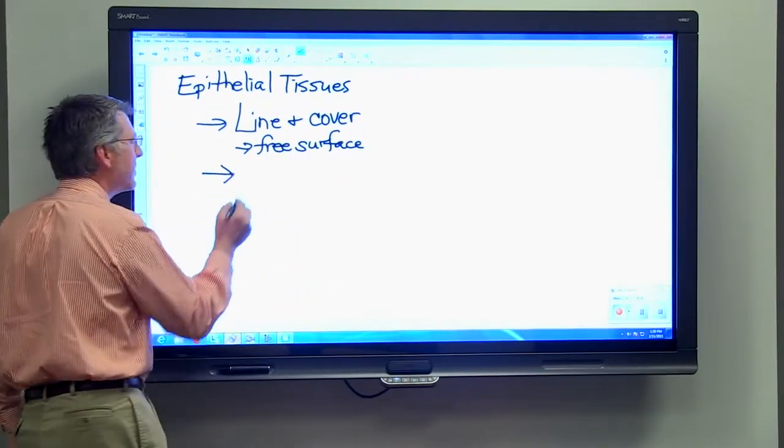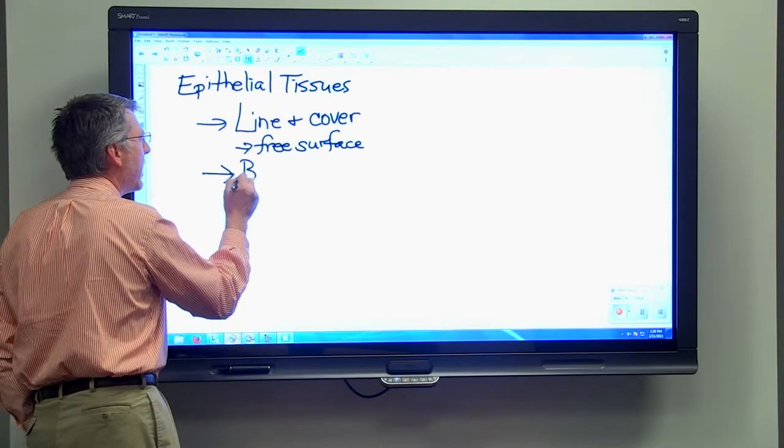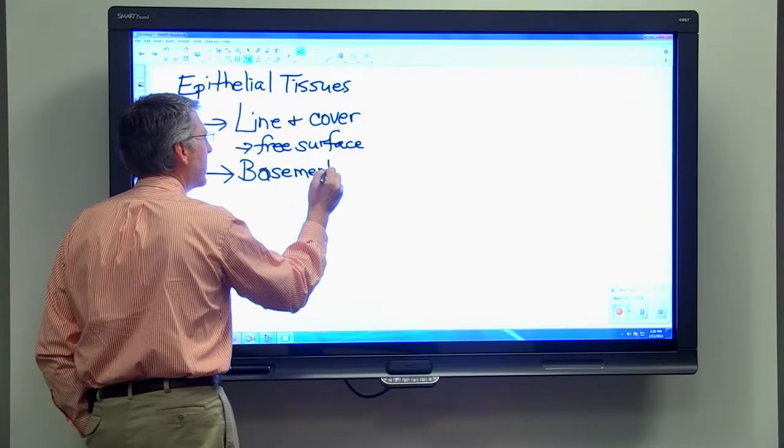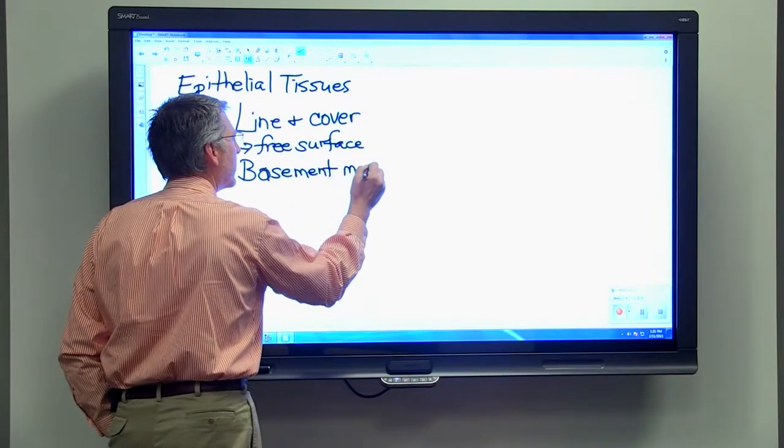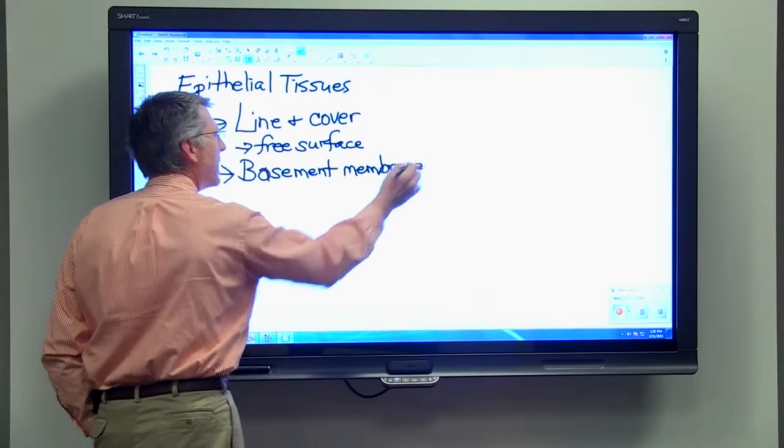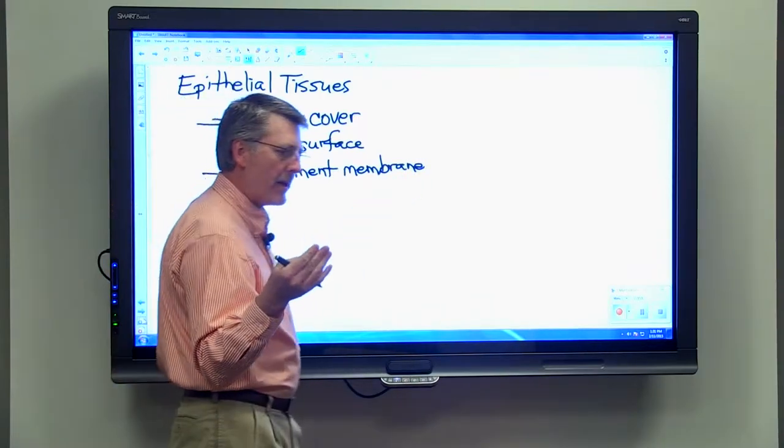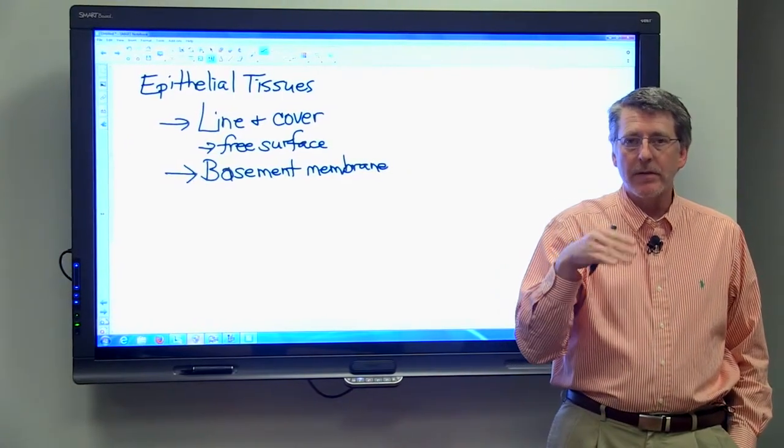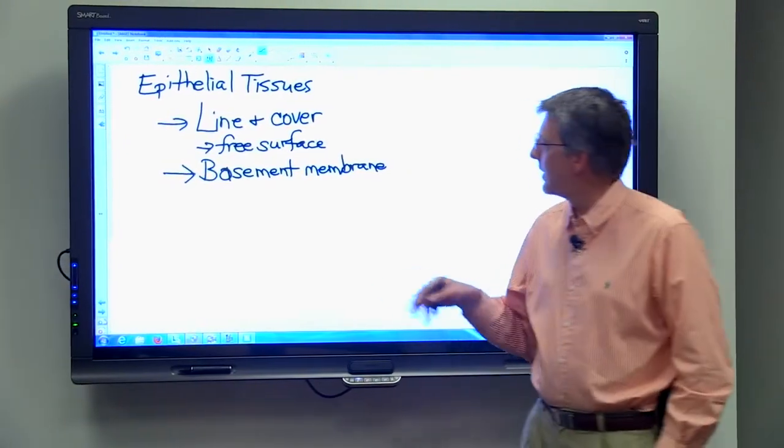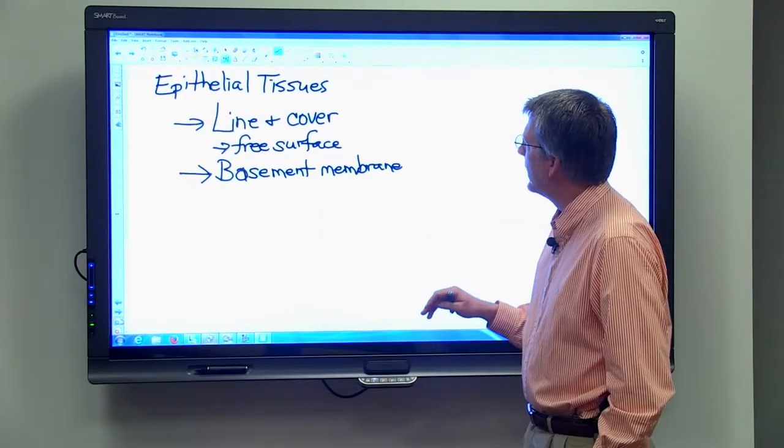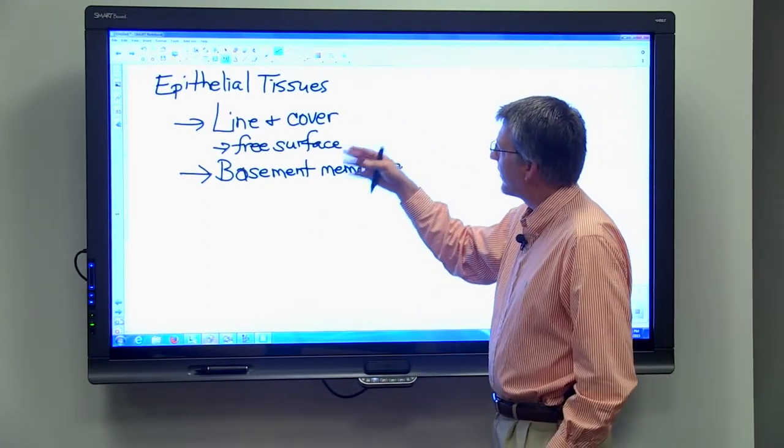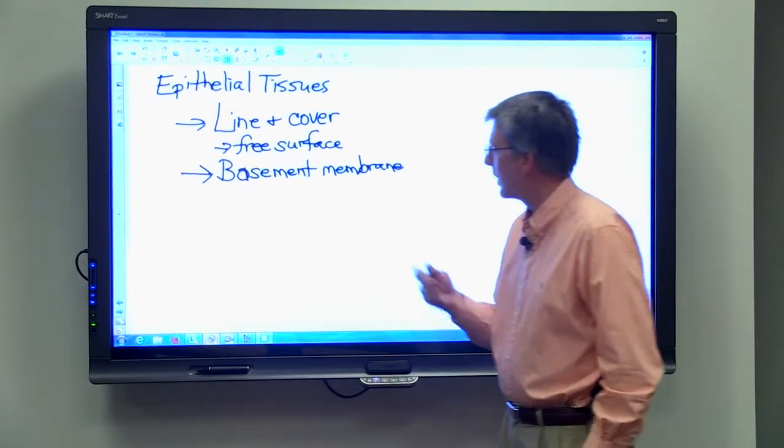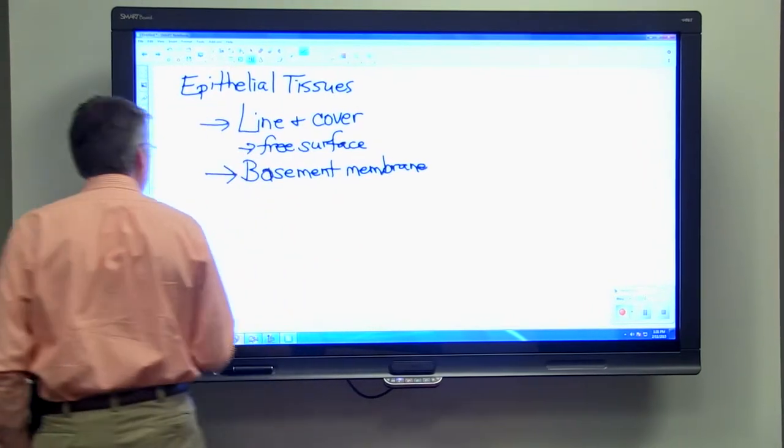Another thing about epithelial tissues is they always have a basement membrane. That basement membrane is on the other side of the free surface, and it's what attaches the epithelial tissue to whatever tissues are deep to that. So one side is the free surface of the tissue and the other side is where the basement membrane is found.